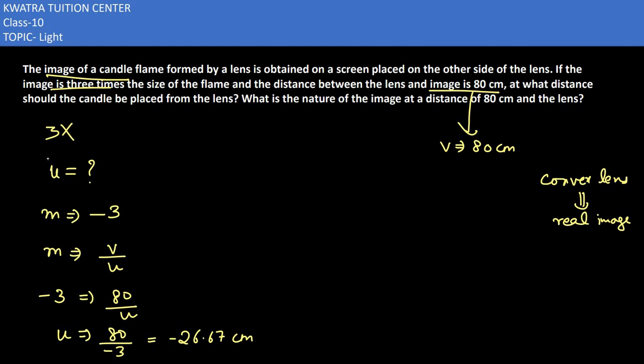You will get inverted or enlarged image when we place the object between F1 and 2F1. The diagram looks like this, and the image will be on the right side - enlarged, real, and inverted.